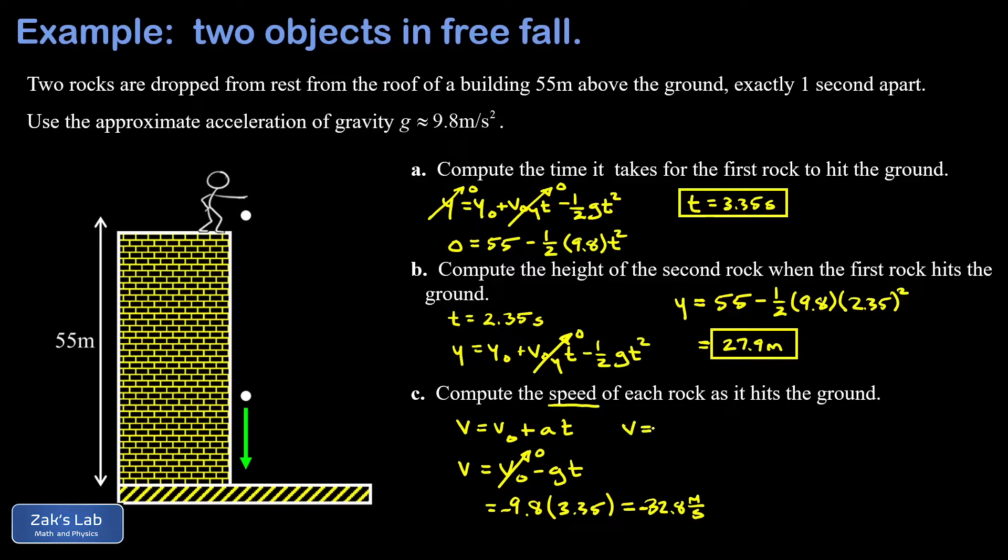It's also fine to use what I normally call the third kinematics equation—the time-independent one. That's v² = v₀² + 2a × displacement, which in this case I'll call y - y₀. We replace a with -g.